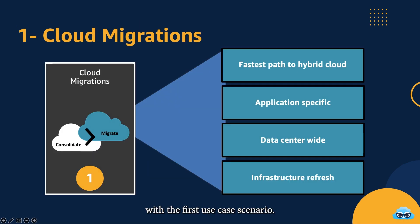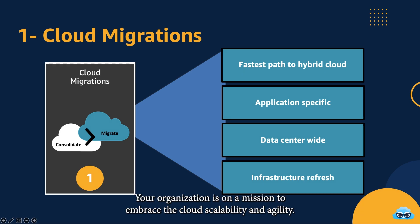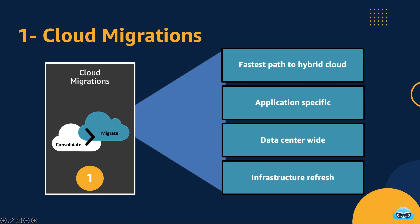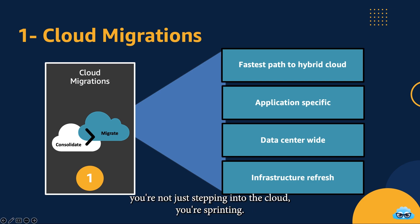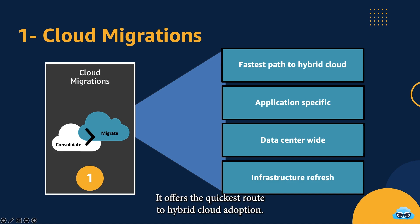Let's start with the first use case scenario. Your organization is on a mission to embrace the cloud's scalability and agility. VMware Cloud on AWS steps in as the catalyst for transformation. Fast Track to Hybrid Cloud — with VMware Cloud on AWS, you're not just stepping into the cloud, you're sprinting. It offers the quickest route to hybrid cloud adoption.